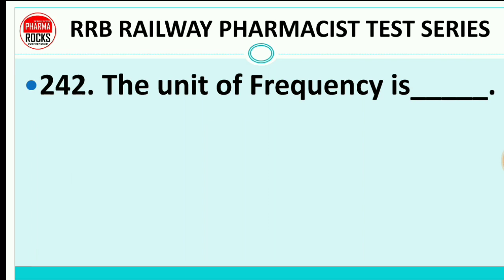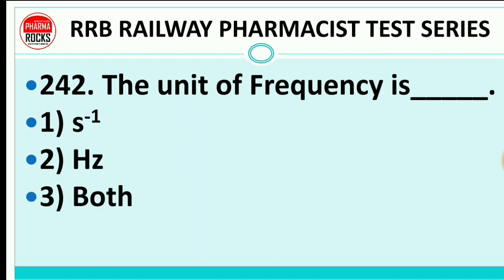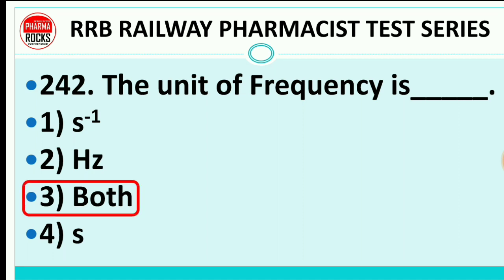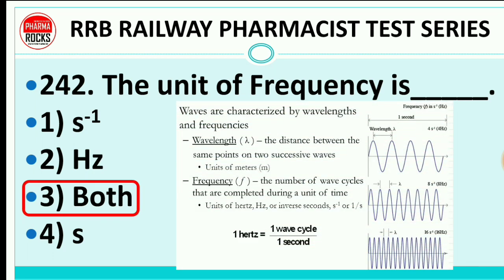Question 242: The unit of frequency is — second inverse, hertz, both A and B, or second? The right answer is both A and B. The unit of frequency is hertz, and inverse second (second⁻¹) — one upon second — is also a unit of frequency.